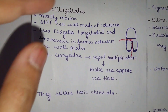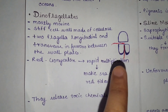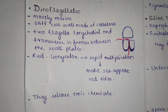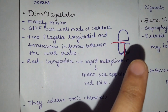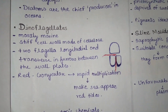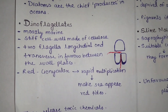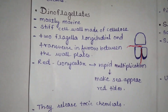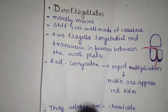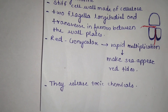Dinoflagellates have two flagella — one longitudinal and one transverse — arising from a furrow between the wall plates. You can see in the diagram the gap which is the furrow from where the flagella arise. Flagella are helpful for movement.